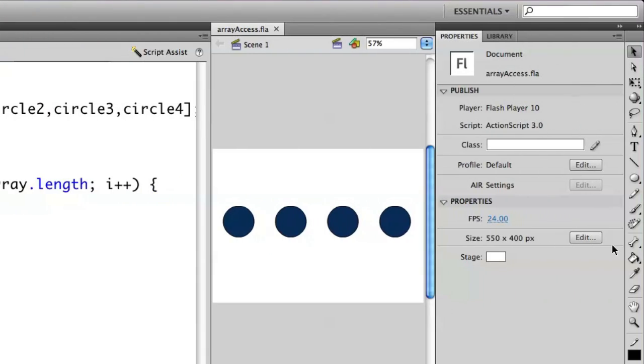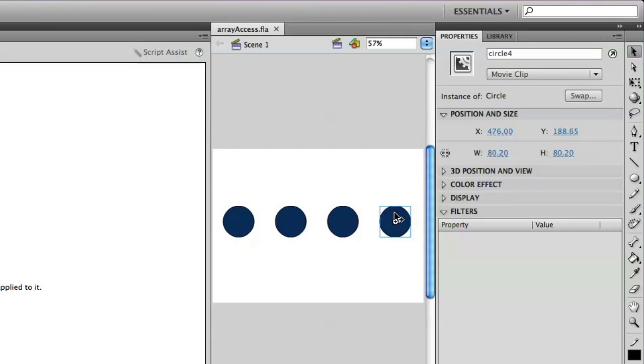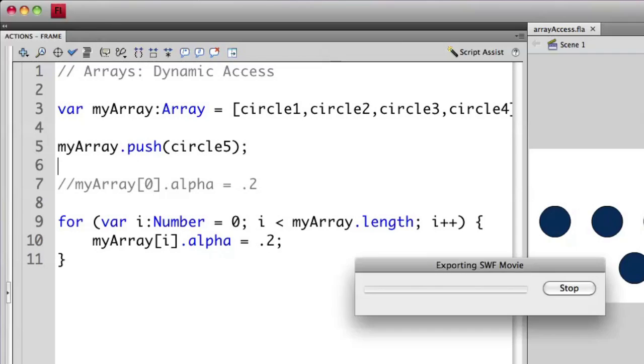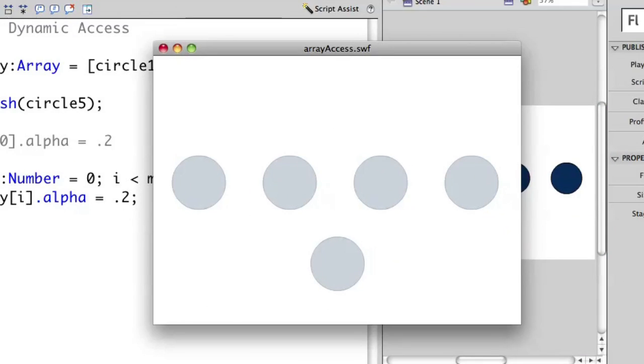Let's take this a step further. I'm going to create another instance and call this circle5. Now I can go in here and I'm not going to modify the original array. Let's actually push this circle5 onto that one - myArray.push circle5. Notice that it still changes to semi-transparent because I've taken this particular item and pushed that onto the end of the array. I don't have to change my loop. The loop will always work for every single item in the array no matter where they are.